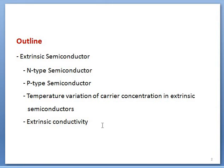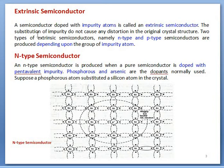As we know, when impurity atoms are doped in an intrinsic semiconductor, then an intrinsic semiconductor is transformed into an extrinsic semiconductor. And depending on which kind of impurity is doped, an intrinsic is transformed into N-type or P-type.